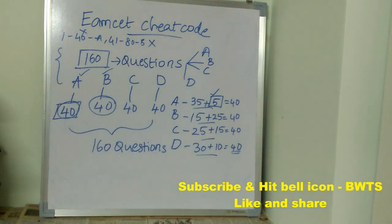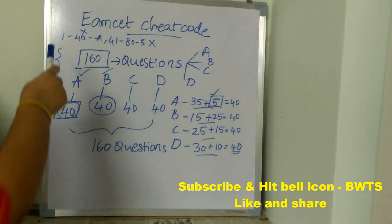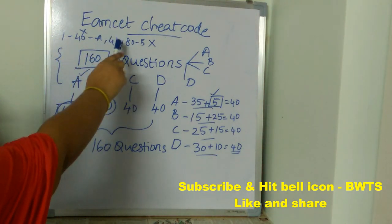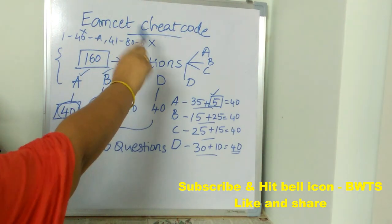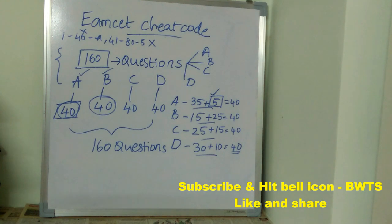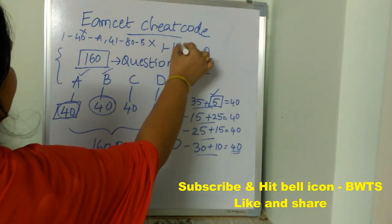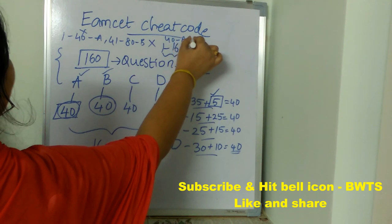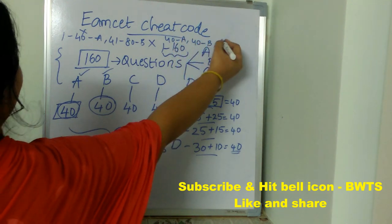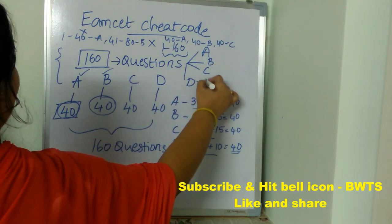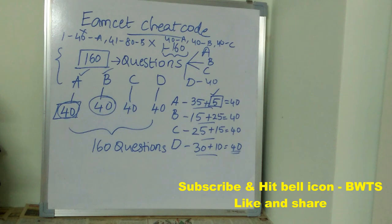One important thing: it is not the case that questions 1 to 40 will all have Option A, and 41 to 80 will all have Option B. You have to use this technique randomly. Out of 1 to 160 questions, any 40 will have Option A as the answer, any 40 will have Option B, any 40 will have Option C, and any 40 will have Option D. You have to use this cheat code in a random format.